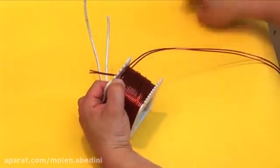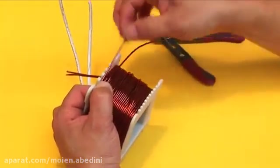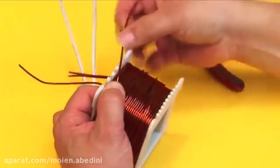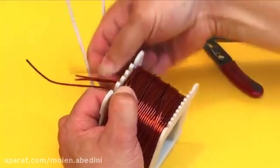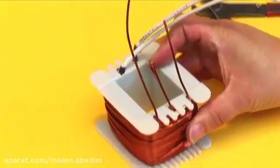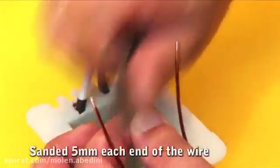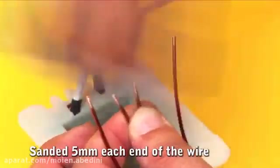At the end of winding, cut the wire and insert the tips of the wire in the output slots. We sand the ends of the wire to remove the dielectric isolating layer of varnish.